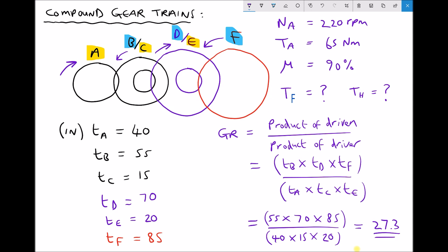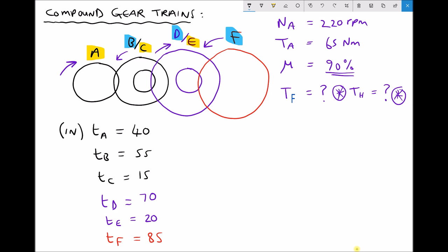Now that we have our gear ratio, we're going to calculate a couple of things. First of all, we're going to calculate the torque of gear F. And then we're going to calculate something called the holding torque. Now the method we're going to use to calculate the torque of gear F is we're going to calculate the ideal torque based on our gear ratio, and then we're going to apply our efficiency.